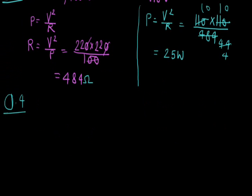Next question: two conducting wires of same material and of equal length and equal diameter are first connected in series and then in parallel across the same potential difference. The ratio of heat produced in series and parallel combinations would be? Same material, equal length, and equal diameter means their resistances are the same. Suppose each wire has resistance R.